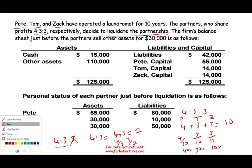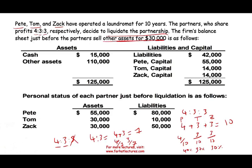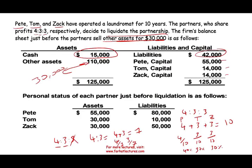They sold their assets for $30,000. This is their balance sheet. They have cash of $15,000, other assets of $110,000, and they only got $30,000 for the non-cash assets — they sold at a loss, meaning they're selling very quickly. Their liabilities are $42,000. These are their capital balances — all credit balances, so they don't have any deficit. And this shows where they stand from a personal level.